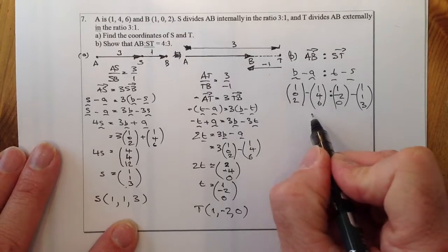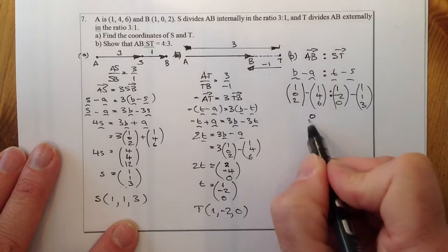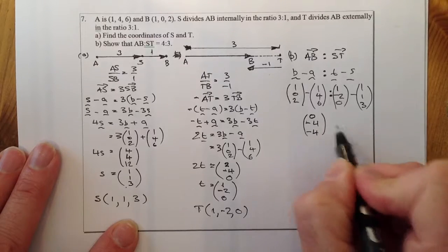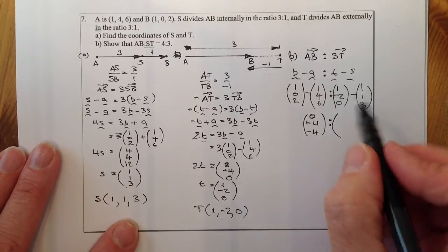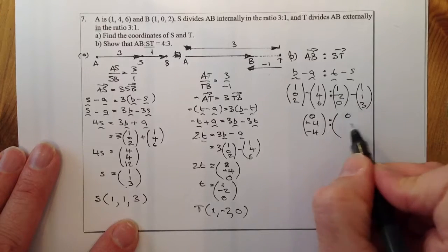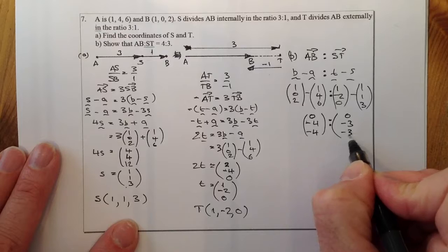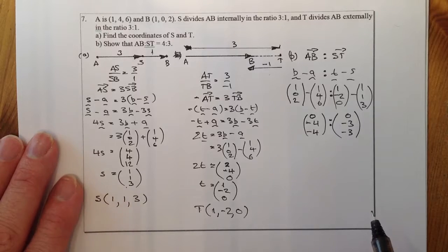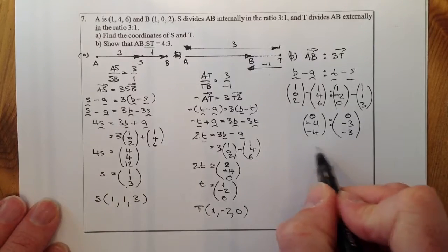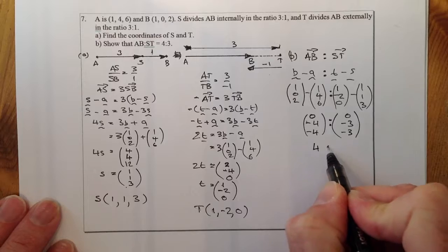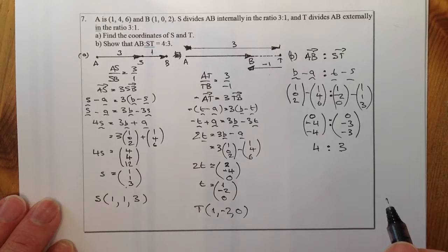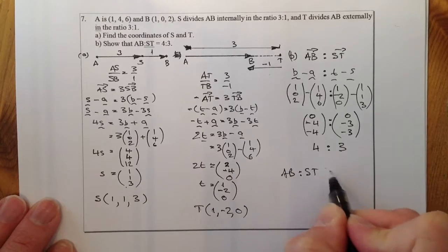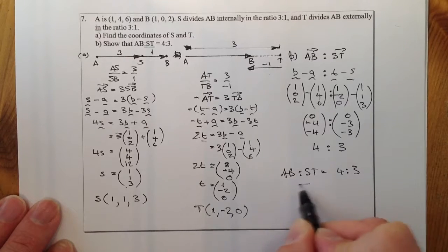Calculating AB: 1 minus 1 is 0; 0 minus 4 is minus 4; 2 minus 6 is minus 4. So AB gives (0, -4, -4). Calculating ST: 1 minus 1 is 0; minus 2 minus 1 is minus 3; 0 minus 3 is minus 3. So ST gives (0, -3, -3). Comparing these vectors, the ratio is 4 to 3. Therefore AB to ST equals a 4 to 3 relationship.